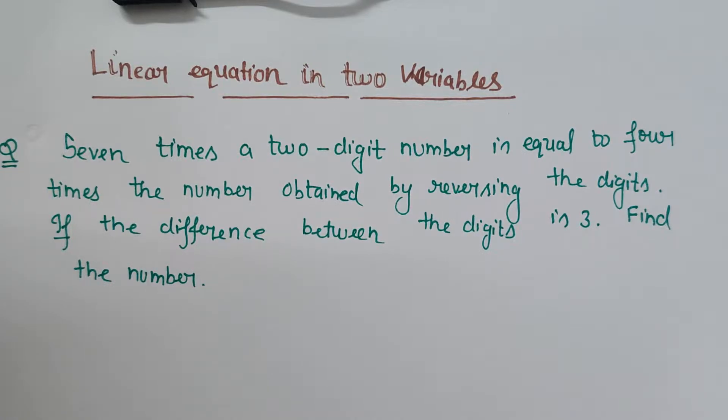Hello friends, it's a word problem from linear equation in two variables chapter, class 10. It says that seven times a two-digit number is equal to four times the number obtained by reversing the digits. If the difference between the digits is three, find the number.